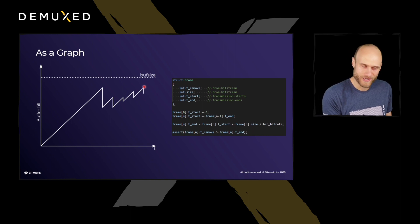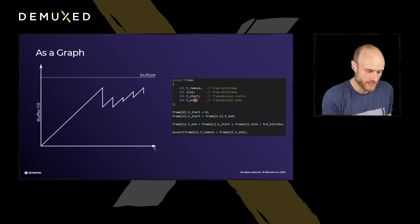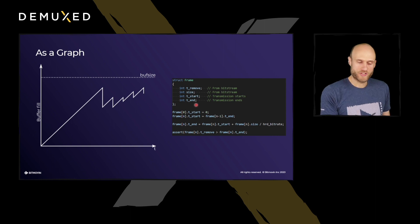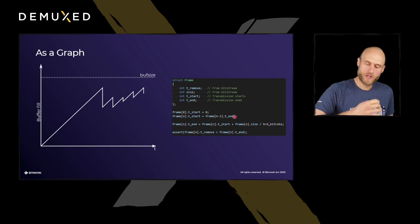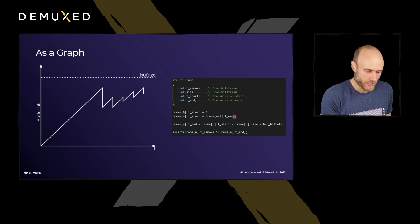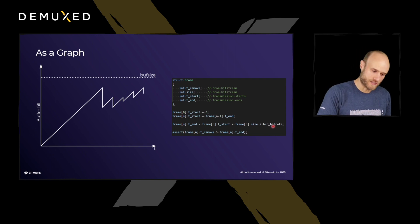We can also put this into a little bit of pseudo C++ code. Per frame, we calculate some values. We have a removal time we can get from the bitstream — it's a regular grid, so we can just calculate these times. The size we can just read from the bitstream by counting bits. For each frame, we calculate a start and an end time: the time when we start transmission of the first byte, and the end time when we finish transmission of everything. For the first frame, the start time is zero. For each following frame, the start time is just the end time of the previous frame — so every time we finish transmission of a frame, we immediately start the next one. The end time is calculated from the start time, the size, and the HRD bitrate: size divided by bitrate gives how long it takes to transmit all the bytes.